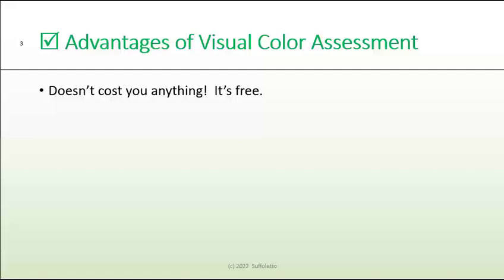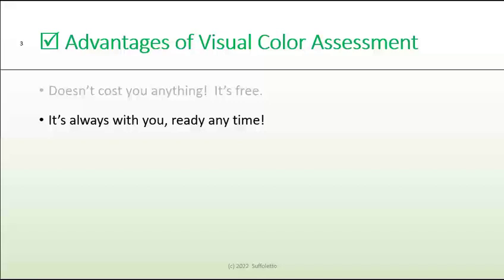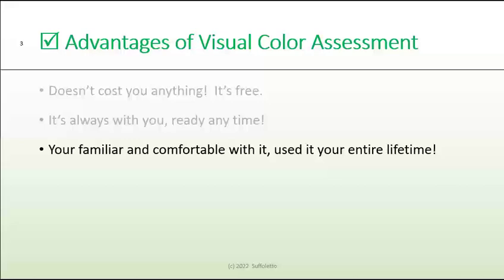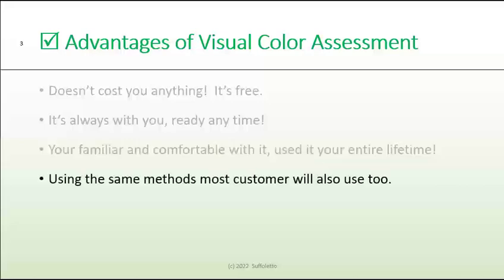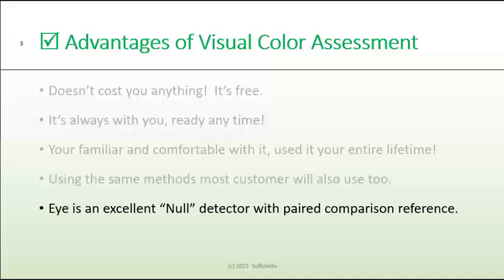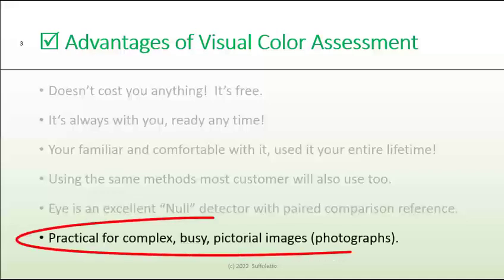There have been some recent developments in smaller pocket-sized portable spectrophotometers. Two that come to mind are Variable, which is three hundred dollars, and Nix, which is about one thousand three hundred dollars. Your eyes are always with you, ready at any time. You're very familiar and comfortable with your eyes — you've been using them for your entire lifetime. Your eyes are probably the same method that most of your customers are going to use to judge the color. The eye is an excellent null detector when you use a paired comparison reference. A null detector means it's the same or it's different. The eye is also a practical approach for evaluating complex, busy pictorial images like photographs.